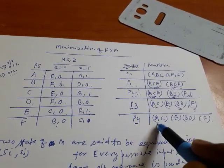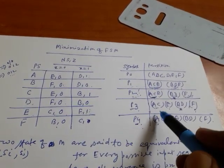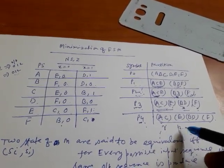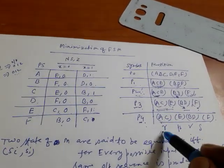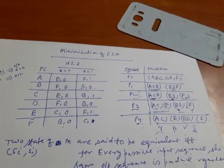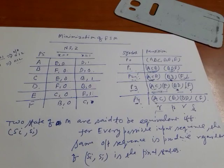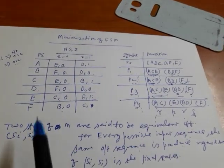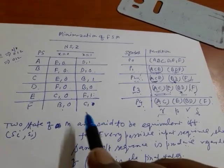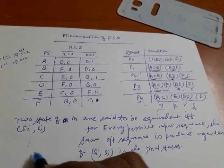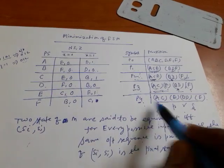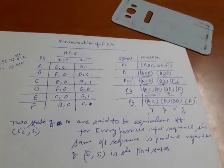If P3 is equivalent to P4 — meaning no changes occur — I can stop. I can say these are the minimized states. I can give them the names alpha, beta, gamma, and delta. By writing these names and following the same process, I can find the corresponding states. Alpha means A and C, beta means E, gamma means D and B, and delta corresponds to the remaining state.